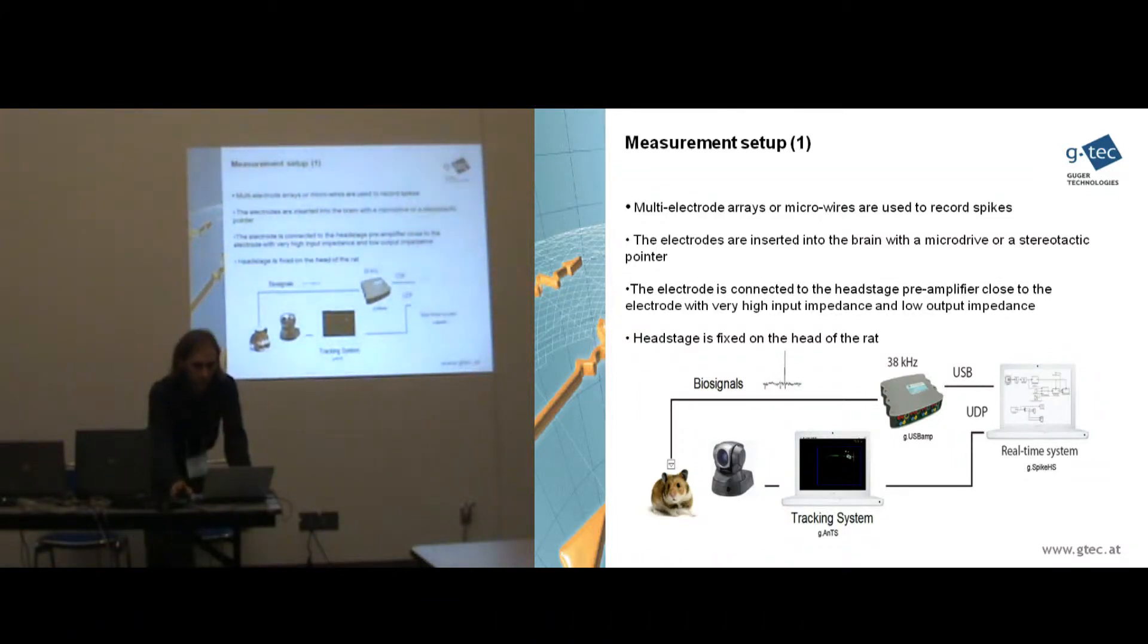So what do you need? First a rat, for example, where you put on the multi-electrode array or microwires. Then you have to insert the microwires into the brain, for that you need a micro drive, for example, or a stereotactic pointer to position the electrode exactly. Then you connect it to a head stage pre-amplifier which is as close as possible to the microwires to change the impedance and to drive the cable which goes to the main amplifier.